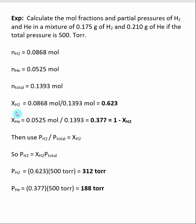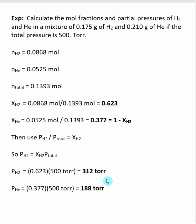Now that we have the mole fraction of hydrogen, we can use it to find the partial pressure of hydrogen. The partial pressure of hydrogen divided by the total pressure equals the mole fraction of hydrogen. Rearranging, the partial pressure of hydrogen equals the mole fraction of hydrogen times the total pressure of the system. We've calculated our mole fraction of hydrogen, and the total pressure was given as 500 torr, so the partial pressure due to hydrogen equals 312 torr. Because pressure was given in torr in the original question, the answer is in torr.